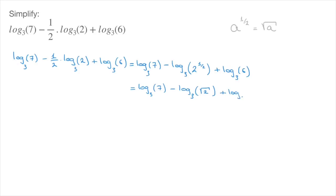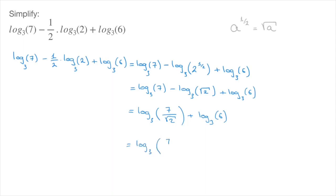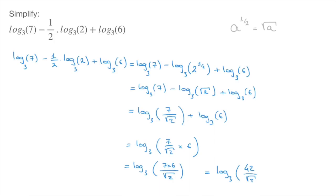Now that that's done, we have three logarithms all written in the same base, which is 3. Working from left to right, the second term is being subtracted from the first, so we use the subtraction rule to get log base 3 of 7 over the square root of 2, plus log base 3 of 6. We're now left with two logarithms being added, so we use the addition rule to get log base 3 of 7 over the square root of 2 times 6. Finally, since 7 times 6 is equal to 42, this equals log base 3 of 42 over the square root of 2.